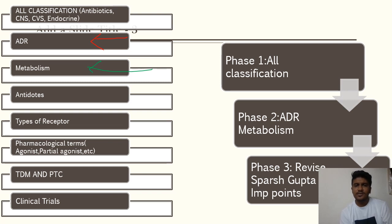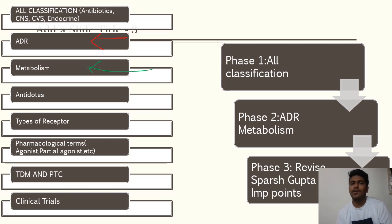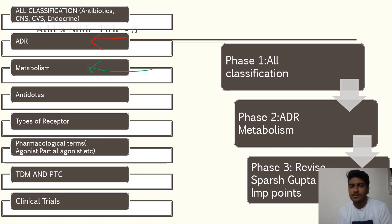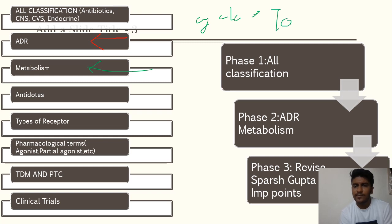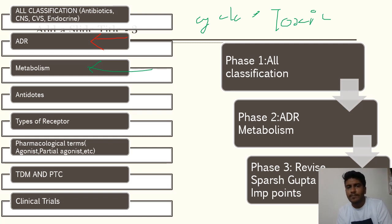Regarding metabolism, certain drugs are prodrugs or have active metabolites. Some drugs have very toxic metabolites — for example, cyclophosphamide's metabolite acrolein is very toxic. Diazepam has an active metabolite, and sulindac has a Phase 2 metabolite which is also active. You need to make a table listing all drug metabolites.